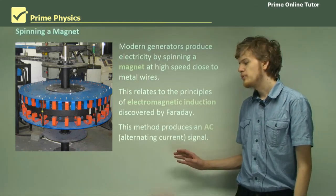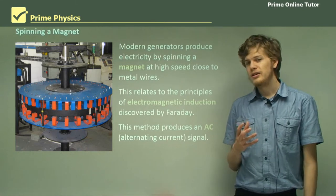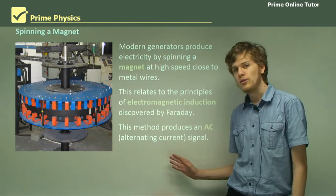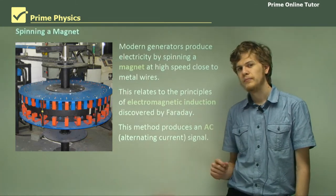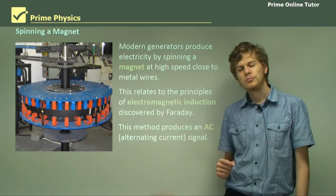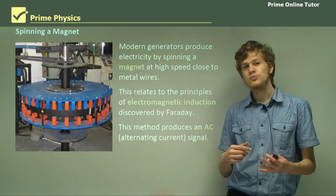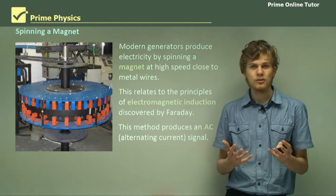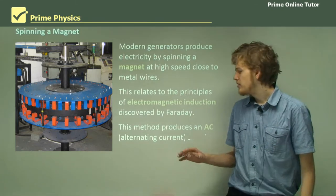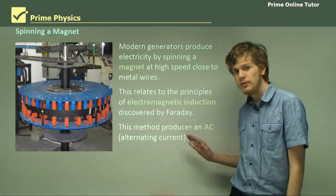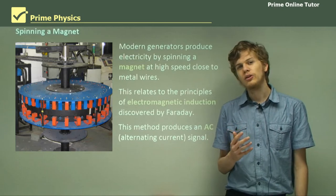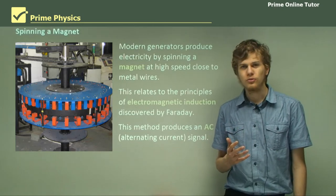This method produces an AC signal, or alternating current signal. There are ways of producing generators which allow a DC signal — that is, direct current — but AC signal is more commonly used.